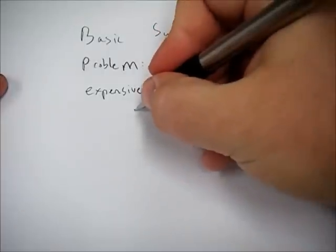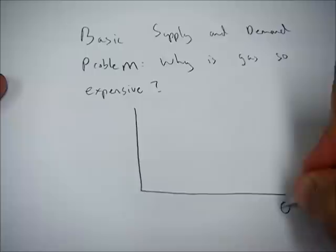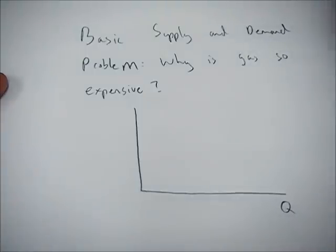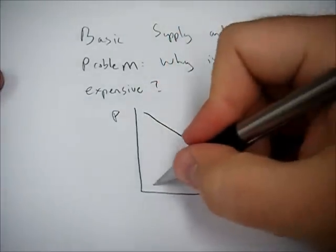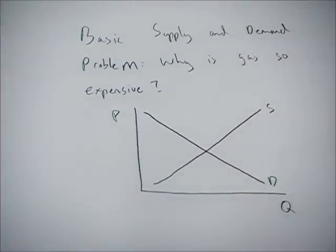So first let's draw our typical supply and demand graph where we have Q, quantity of oil, P, the price of oil, downward sloping demand curve, and our upward sloping supply curve.